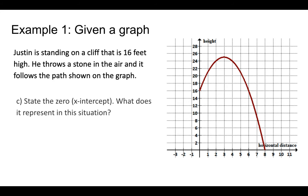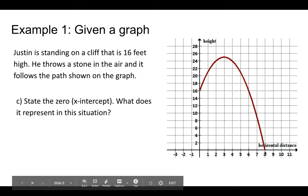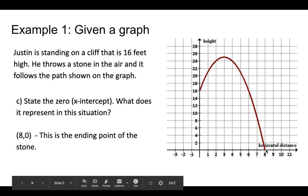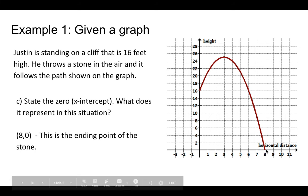Next question: state the zero or x-intercept and what does it represent? The zero is where it goes through the x-axis — again, it's a point. The x value is 8 and the y value is 0 because it's along the x-axis. What does it represent? Well, the rock goes up, comes down, and then hits the ground. So that's where it hits the ground, or where it lands — the endpoint of the stone.